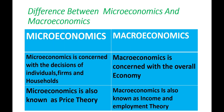Now we will know some differences between microeconomics and macroeconomics. Microeconomics is concerned with the decisions of individuals, firms, and households, and macroeconomics is concerned with the overall economy. Microeconomics is also known as price theory, and macroeconomics is also known as income and employment theory.